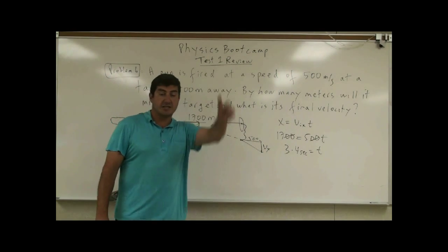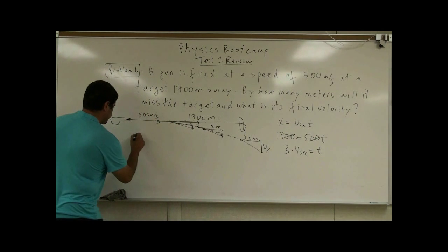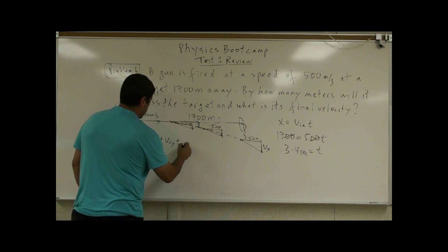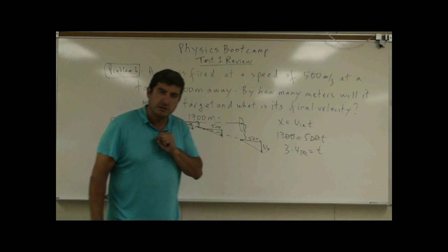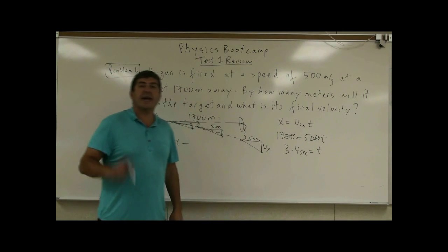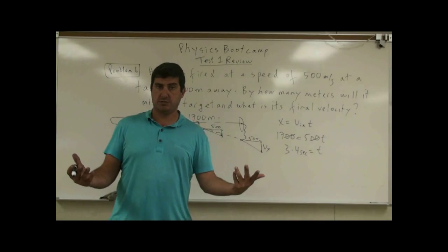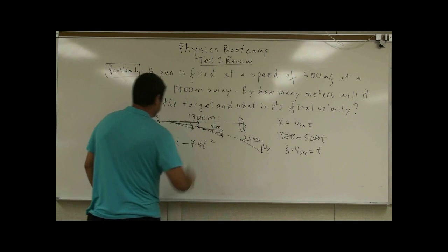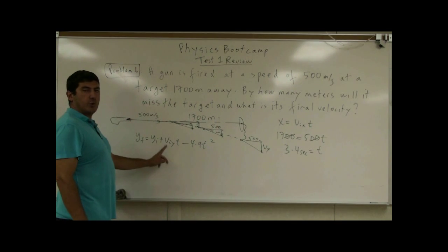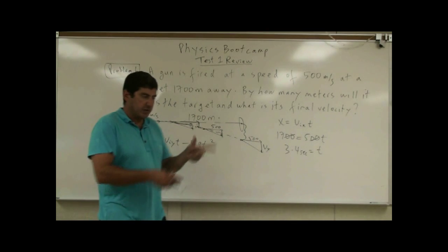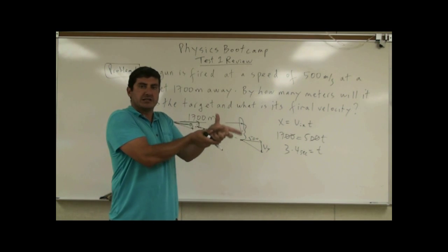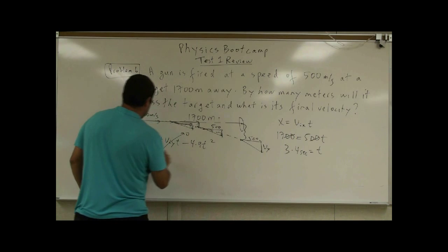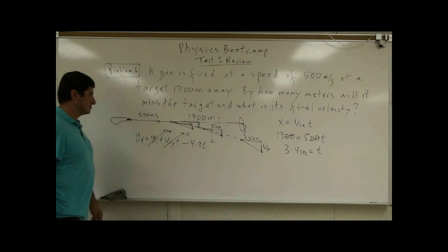So what is the vertical distance that it will have traveled? Now we use this equation: Y-final equals Y-initial plus V-initial-Y times T minus 4.9 T-squared. We're in meters, so half of 9.8 gives us 4.9. What's the initial velocity in the Y direction? You're not shooting it down or up — you're just shooting it horizontal. So the Y-direction velocity is going to be zero, and Y-initial is zero.